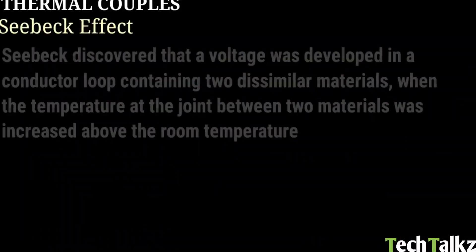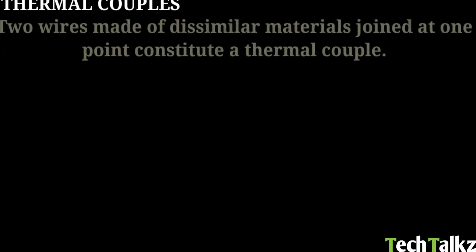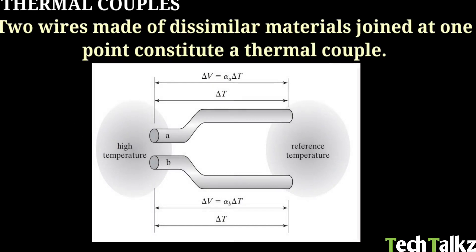Next is thermal couples. The basic working principle behind thermal couples is Seebeck effect. So what is Seebeck effect? In the 1820s, the German physicist Seebeck discovered that a voltage was developed in a conductor loop containing two dissimilar materials when the temperature at the joint between two materials was increased above the room temperature.